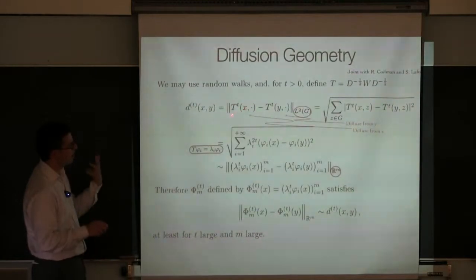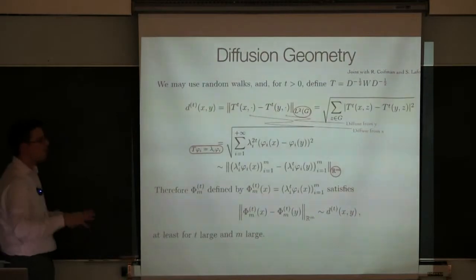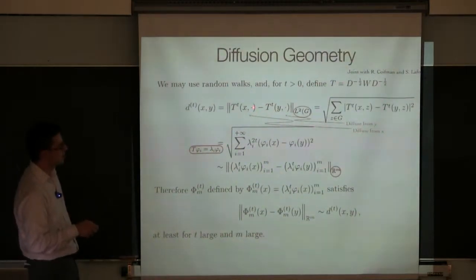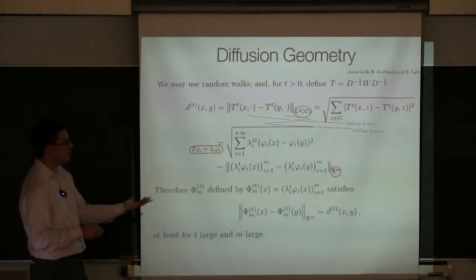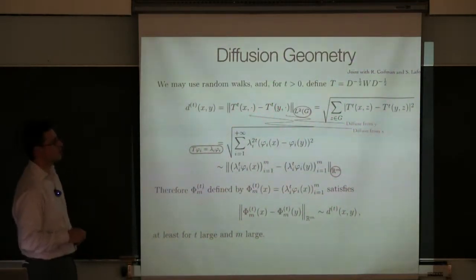So you start from x, you run your random walk for t steps. You're going to end up somewhere with some probability. So this dot here says that the destination is anything. And so this is a probability distribution of reaching the point dot having started from x after time t. You can also start from y and run t steps of the random walk, and you get a different distribution.